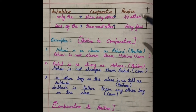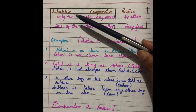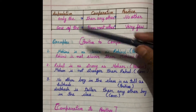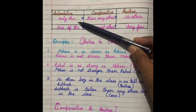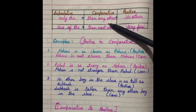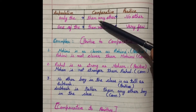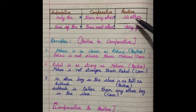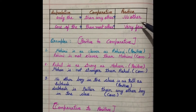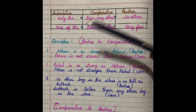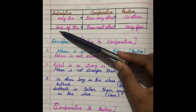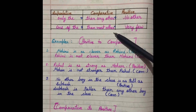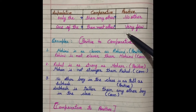Here is a table summarizing the conversion rules. If in superlative degree only 'the' is given, then when we change it into comparative degree, we write 'than any other'. When we change it into positive, we write 'no other'. If in superlative degree 'one of the' is given, in comparative degree we write 'than most other', and in positive degree, 'very few'.